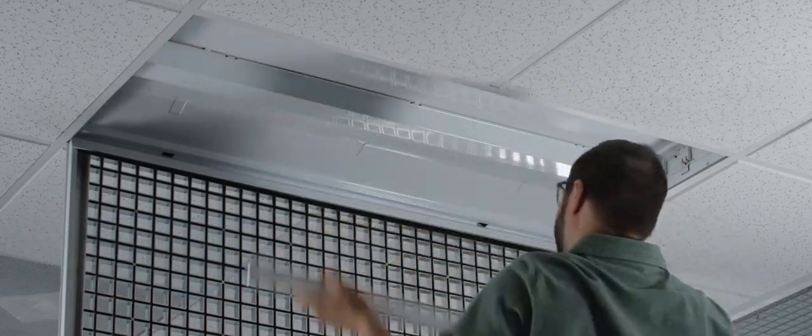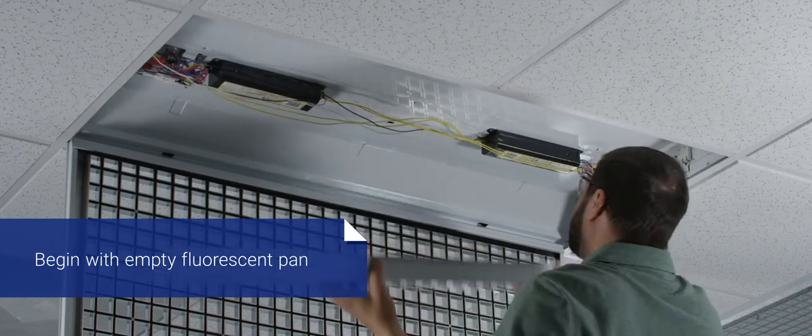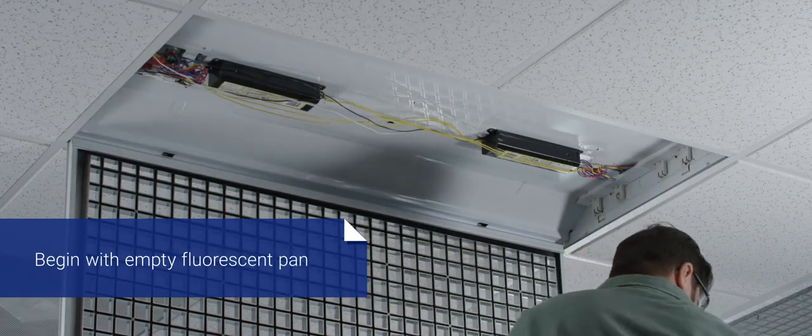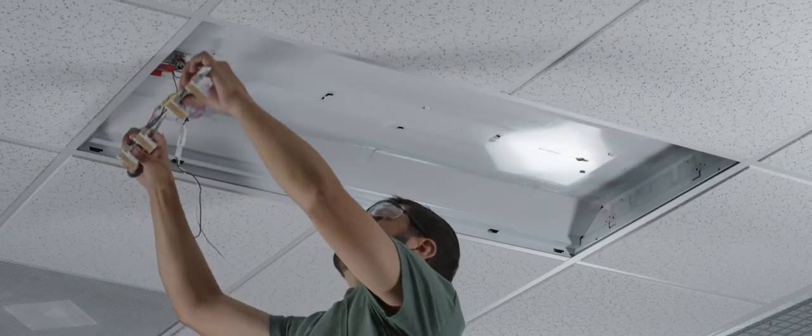Prior to the installation of the troffer retrofit kit, remove the existing fluorescent parts from the pan, including the prismatic or parabolic lens door, the fluorescent tubes, and cover. The ballast and fluorescent lamps should be disposed of according to local code.